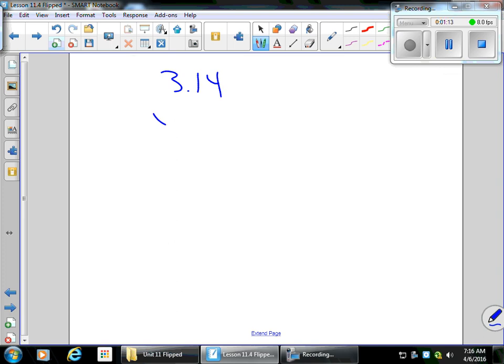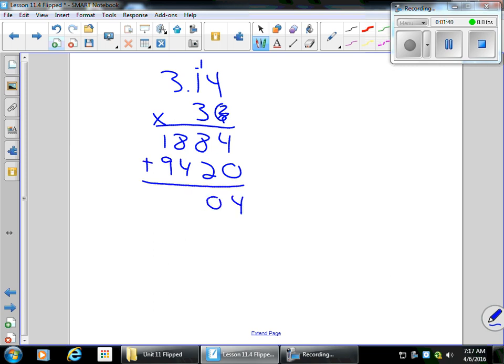3.14 times 36. Like I said, I'm going to show all my math tonight. 4 times 6 is 24. 6 times 1 is 6, plus 2 is 8. 6 times 3 is 18. I'm going to cross off this 6, put the place value holder in. 3 times 4 is 12. 3 times 1 is 3, plus 1 is 4. 3 times 3 is 9. I'm going to add these up. 4. I have a 10 here. 8 plus 1 is 9, plus 4 is 13. 9 plus 1 plus 1 is 11. 2 numbers are after the decimal. I'm going to move this to 113.04.